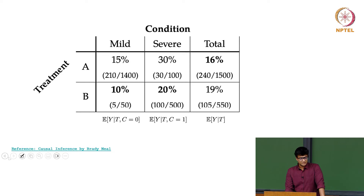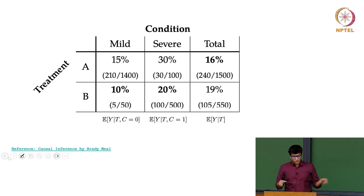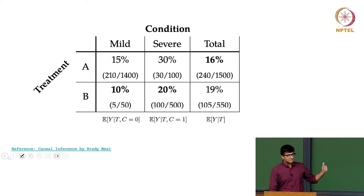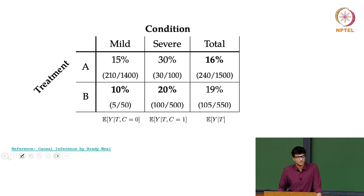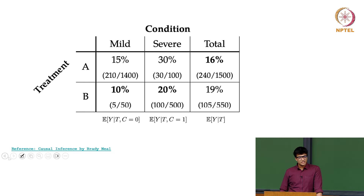Let's look at a situation. We have condition and treatment. If you look at the two treatments A and B, conditions can be mild, severe, and then there's a total column. If you only look at the total column, A seems to be better — it has a lower mortality rate, with 240 people out of 1500 who were given this medicine dying, while B has 19% mortality.